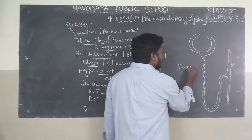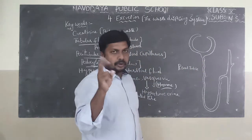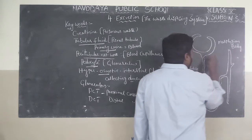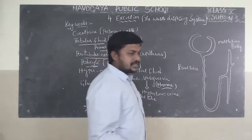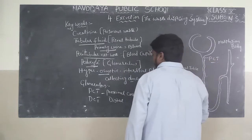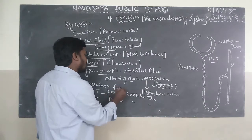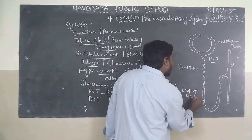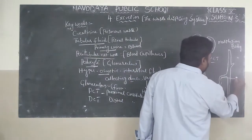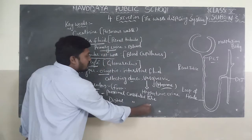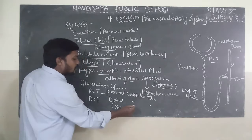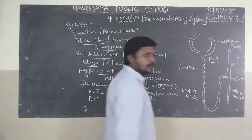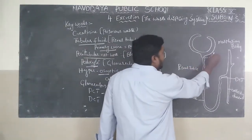In the nephron, we can find out two major parts: the Malpighian body and the renal tubule. In the renal tubule, there are four sub-parts. First is PCT, also known as the proximal convoluted tube or first convoluted tube. Second is the U-shaped, hairpin-like structure known as the loop of Henle. The loop of Henle opens into DCT, the distal convoluted tube, also called the second convoluted tube. The DCT opens into the collecting duct. These are the four major parts of the renal tubule: PCT, loop of Henle, DCT, and collecting duct.